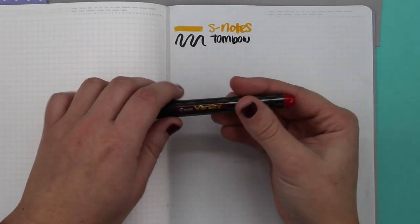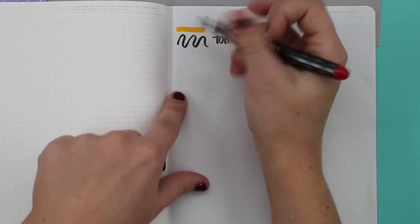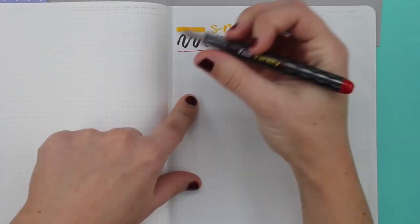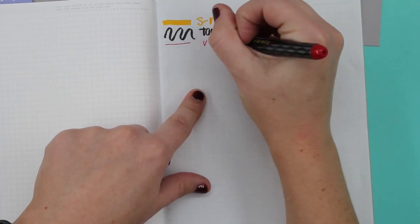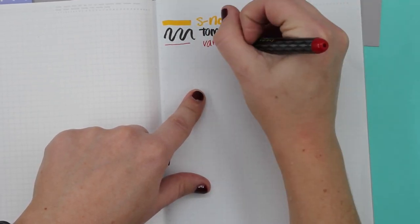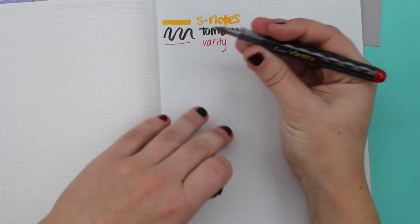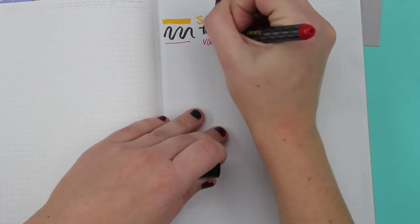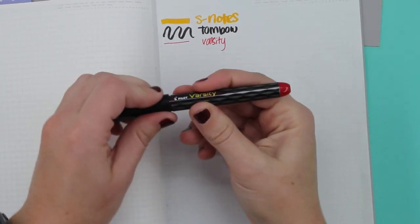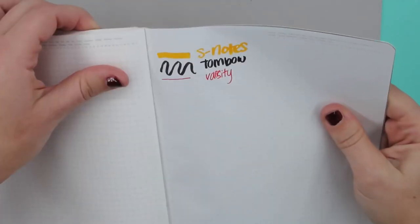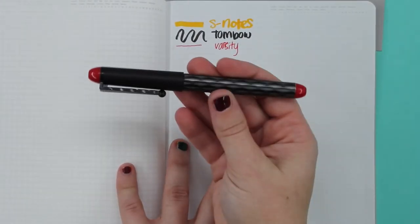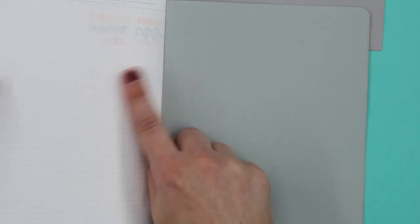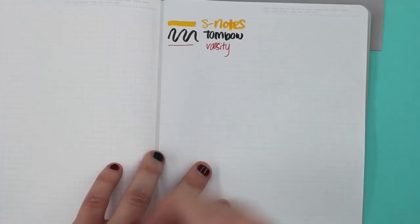So now here we have it, the Pilot Varsity. So this is a fountain pen. So with a lot of it is that there is feathering with a Varsity. Misspelled that, that's okay. Feathering. So let's take a look. I'm not seeing everything feathering, so that is great for a fountain pen users with the Varsity. Let's check. Little bit of ghosting, not too bad. So that is still a thumbs up.